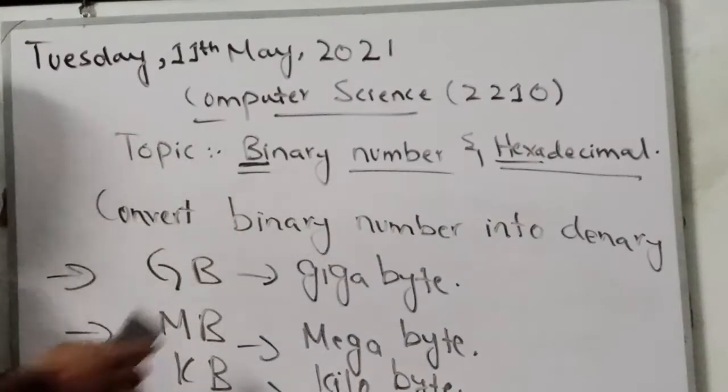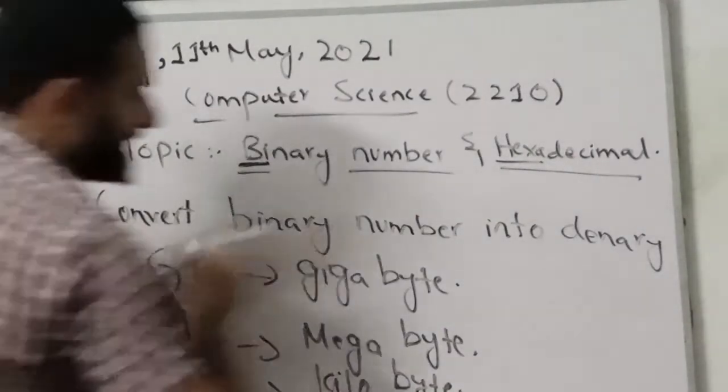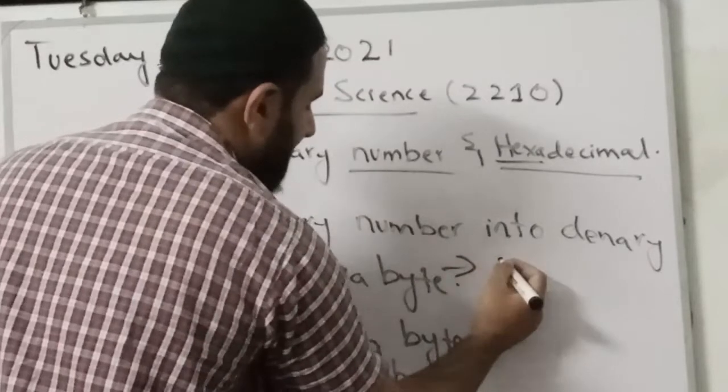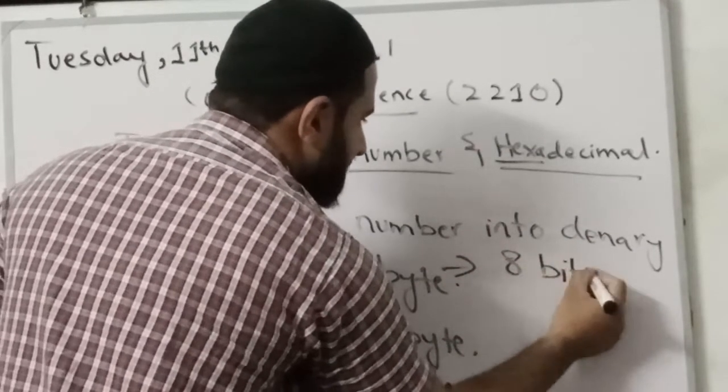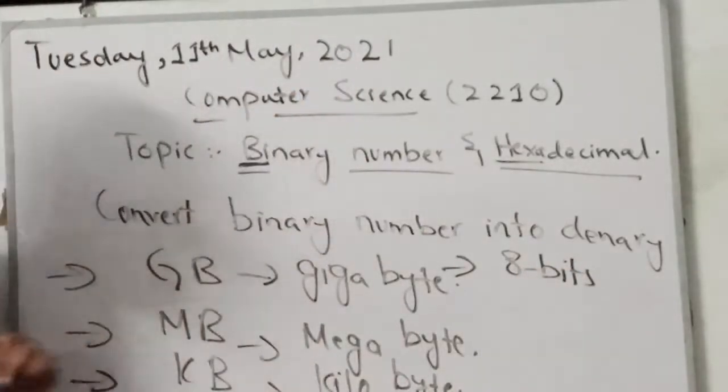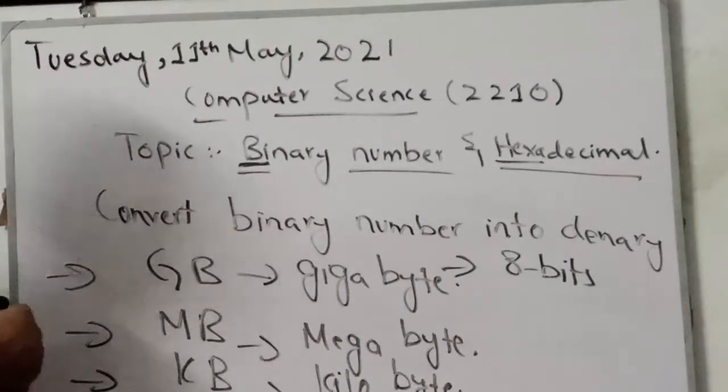Now next thing is, what is byte? Byte is a collection of 8 bits. Collection of 8 bits are called byte.